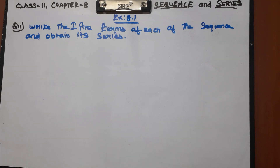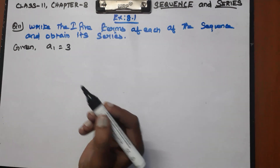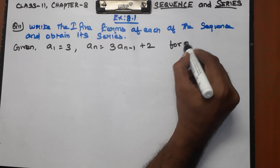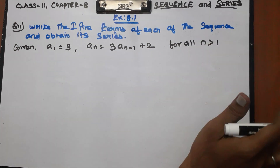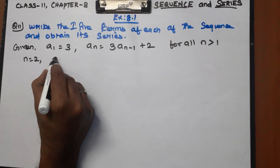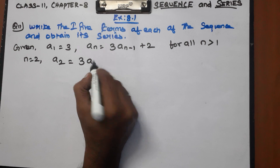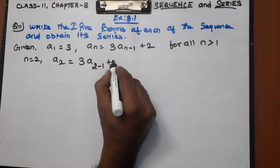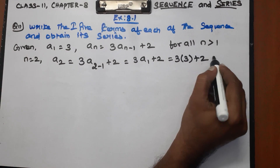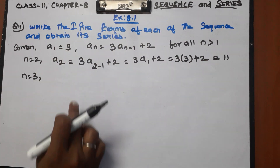Question Number 11. Given: a1 equal to 3, and an equal to 3 times an-1 plus 2, for all n greater than 1. To find a2, substitute n equal to 2: a2 equals 3 into a1 plus 2, which is 3 into 3 plus 2, equals 9 plus 2, equals 11.